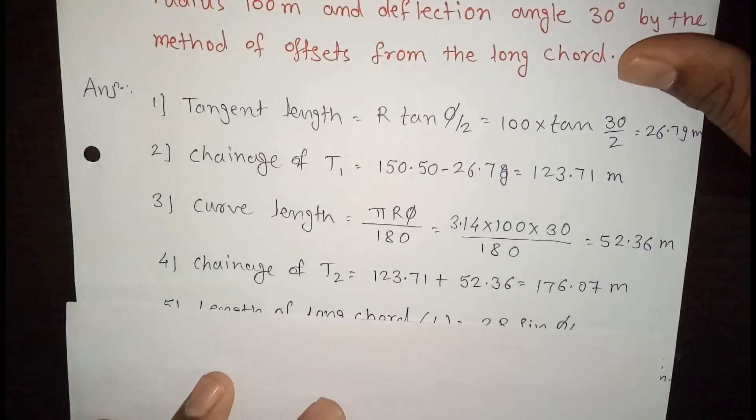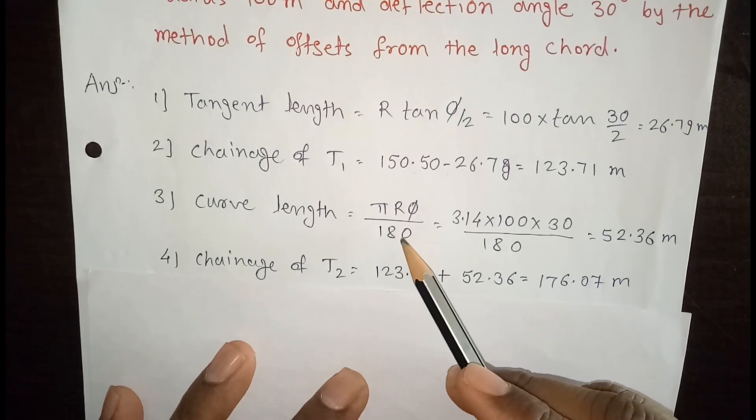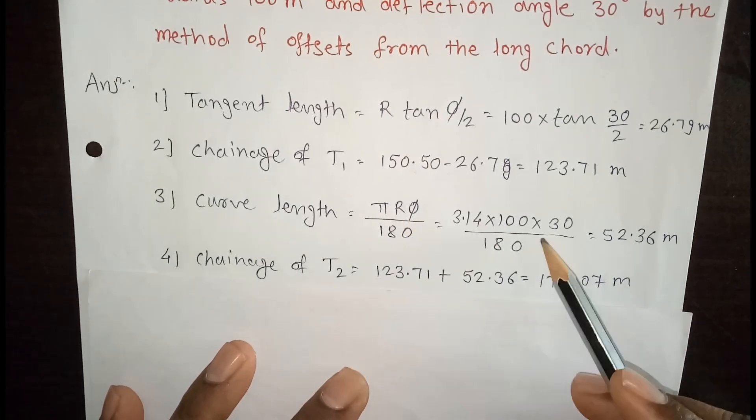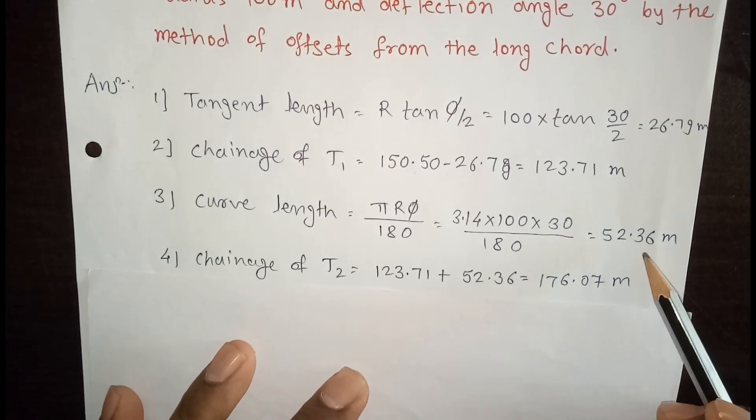Third step is curve length. Formula for curve length is πRφ by 180. R is the radius and φ is the deflection angle. So curve length is 52.36 meter.